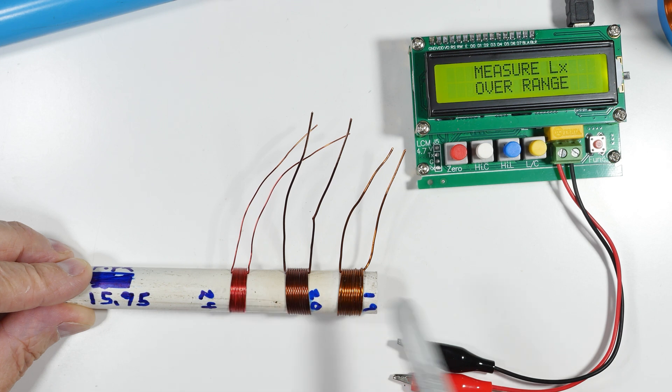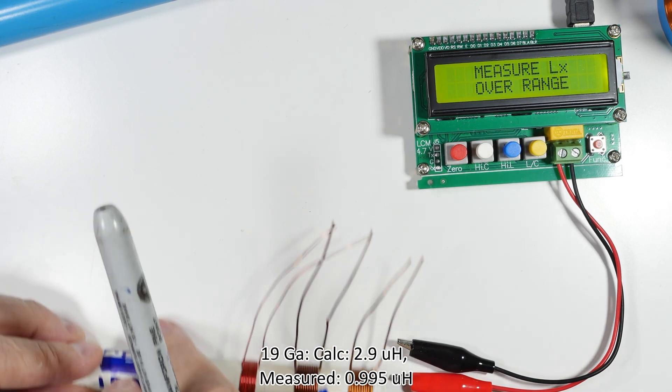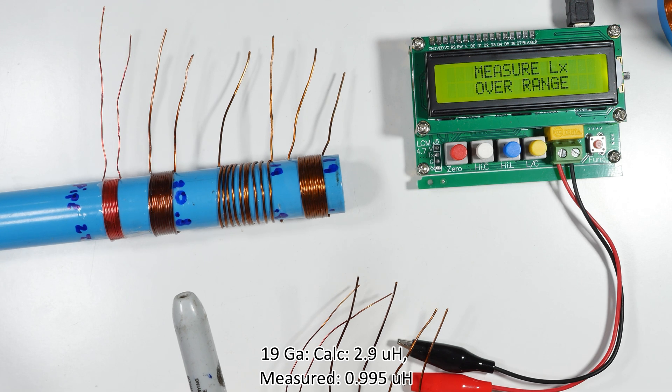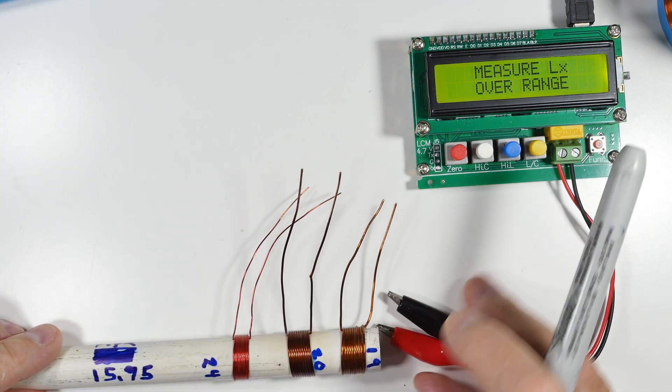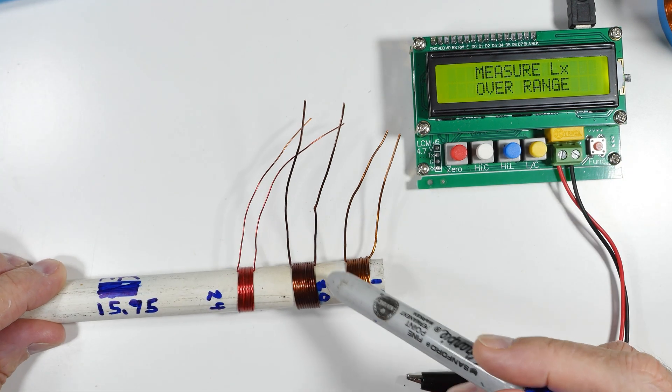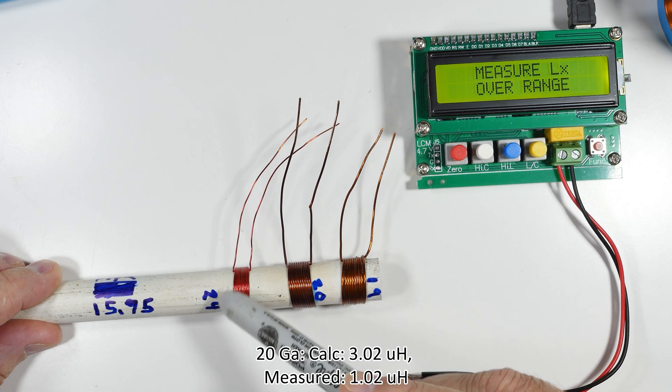So again, this is 19 gauge tightly wound 10 turns, 20 tightly wound, and 24 gauge tightly wound. I ran the calculation, then measured it, and in every one of these the measurement was one third of the calculation. These others were right on within the error of the calculator. These were one third of the value.